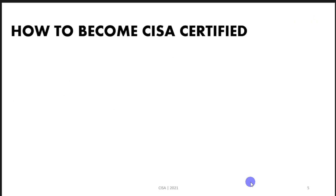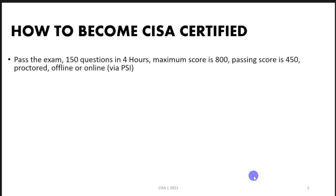Let's talk about how to become CISA certified. Passing the exam is the first step. The exam is 150 questions and you need to answer within four hours. Personally, I finished my CISA exam in about three and a half hours, so it is a very strong exam and you need to prepare well for it.